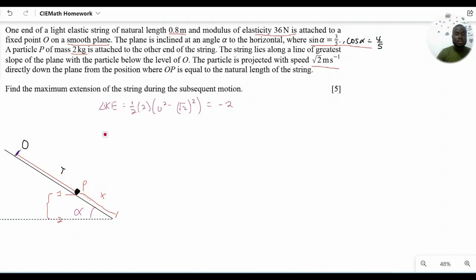Now let's look at the change in gravitational potential energy between the two points. Since the particle is moving from a high potential to a low potential, the change in GPE will be a negative change, a reduction. Remember x here is how far down the slope it goes, which is the maximum extension in the string.